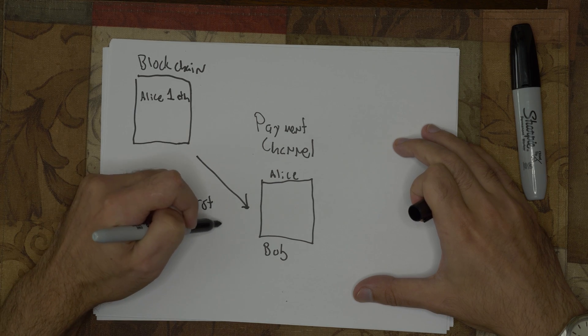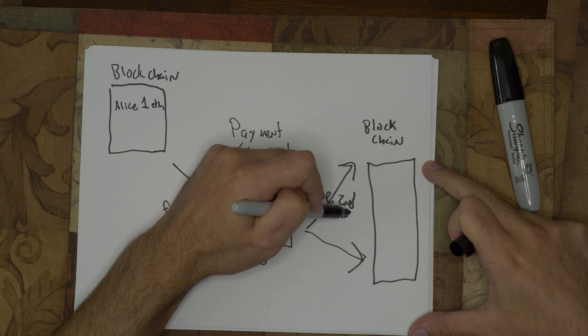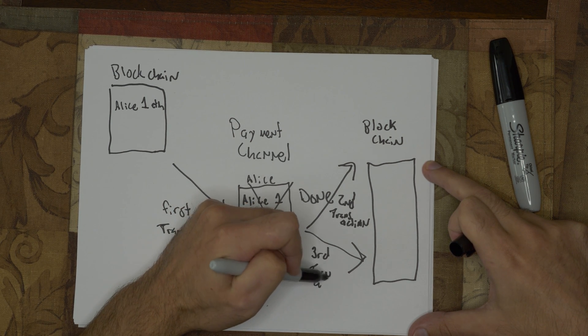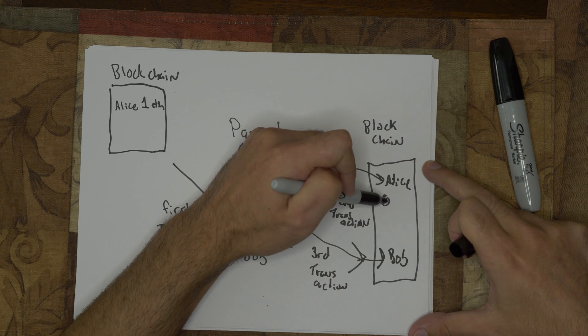This brings us infinite transactions at the cost of only two to three transactions on the actual blockchain. One transaction to send the coin to the payment channel, then the final two transactions would be to send the coins to each party. If one party has a zero balance at the time of channel closing, then only one final transaction needs to be made — that's why sometimes it's two and sometimes it's three total transactions.